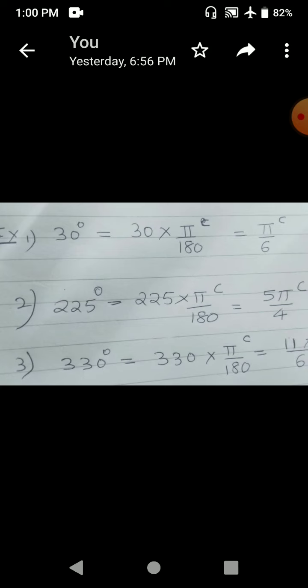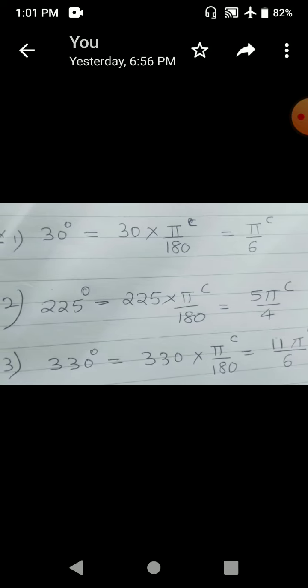225 degrees is also a standard angle. So 225 into π by 180, which will give you 5π by 4.